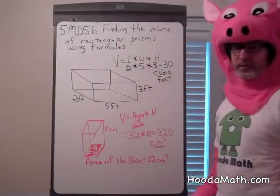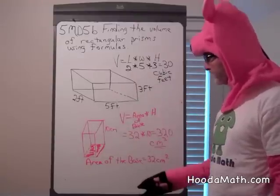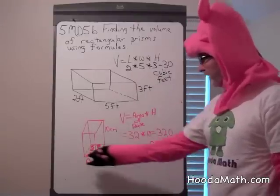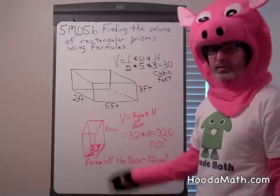So, there's two ways to find volume by formulas: length times width times height, and area of the base times the height. We don't even need to know the two dimensions.